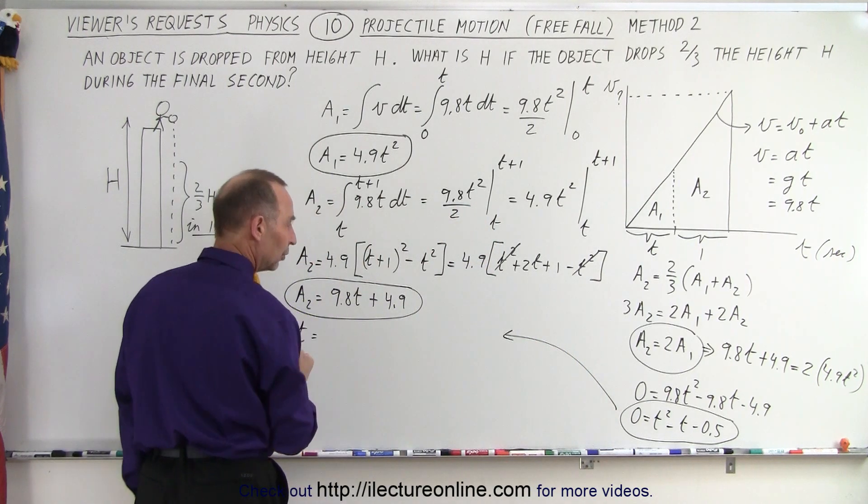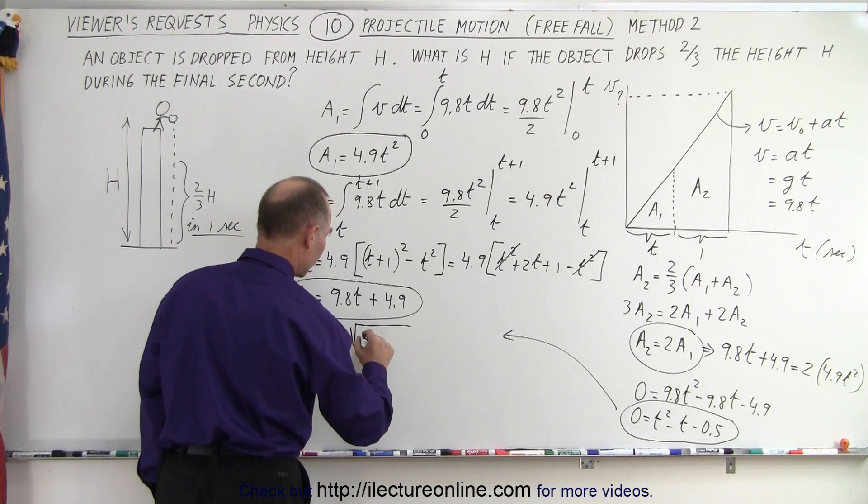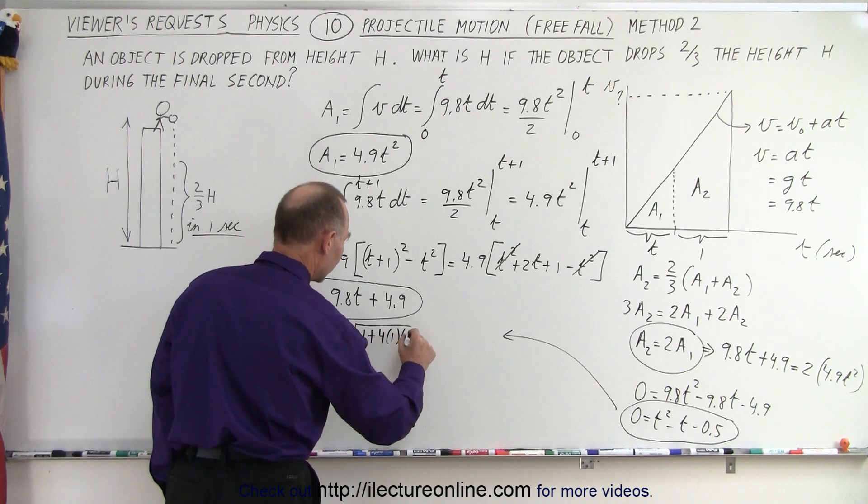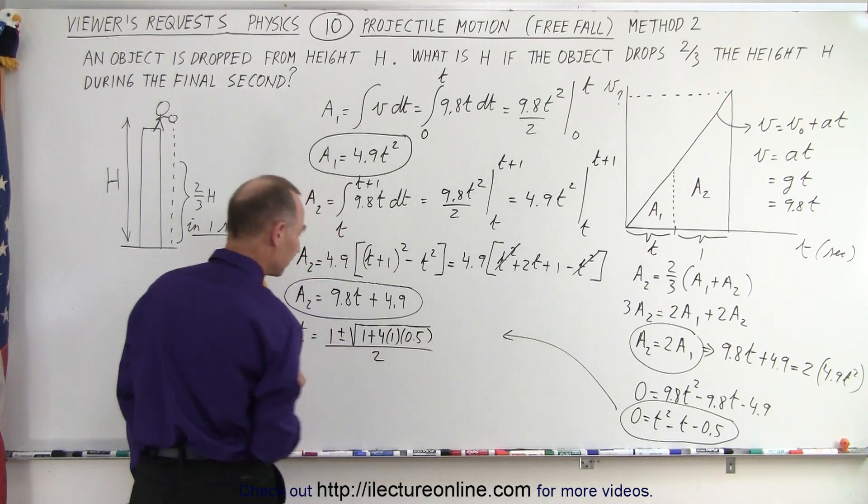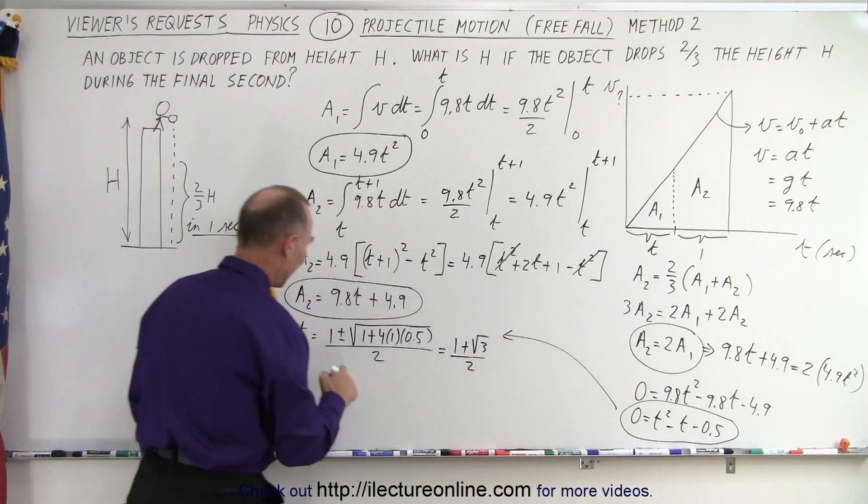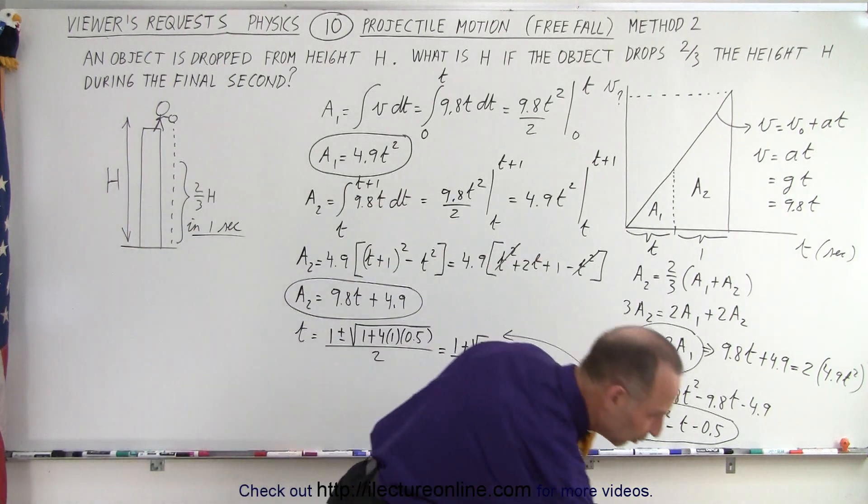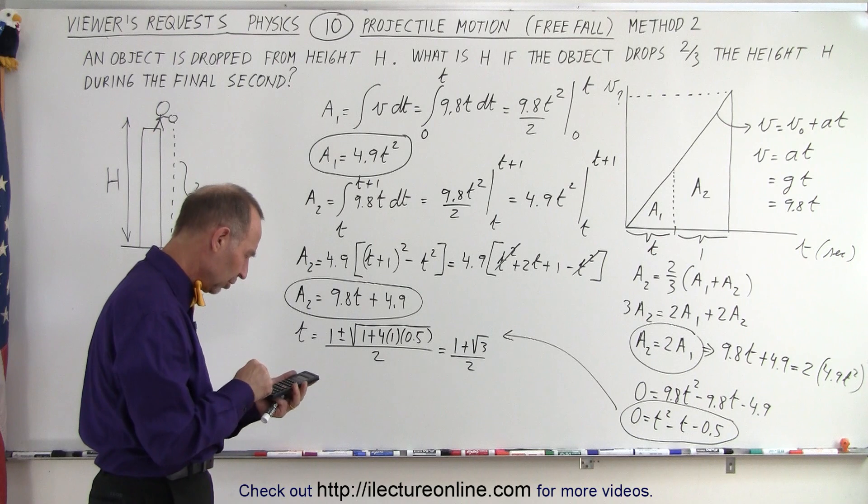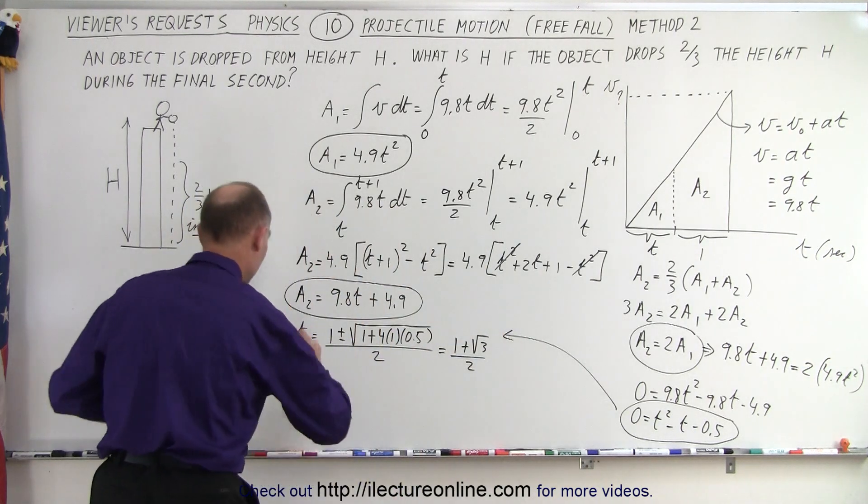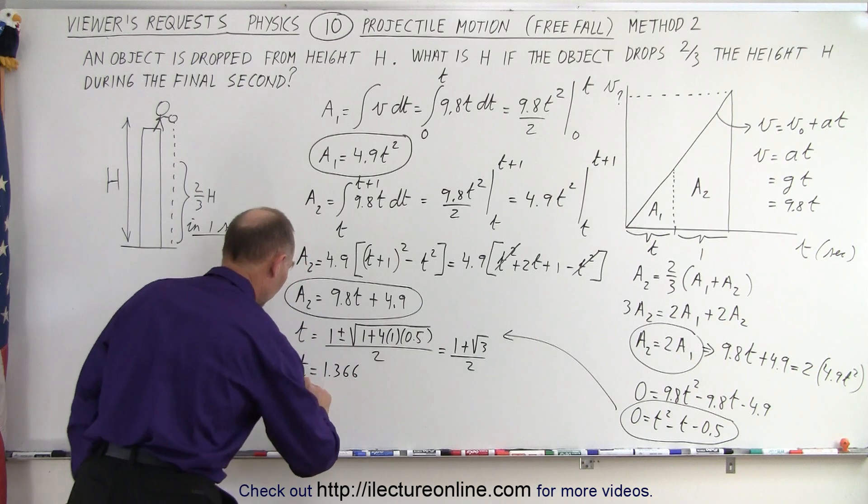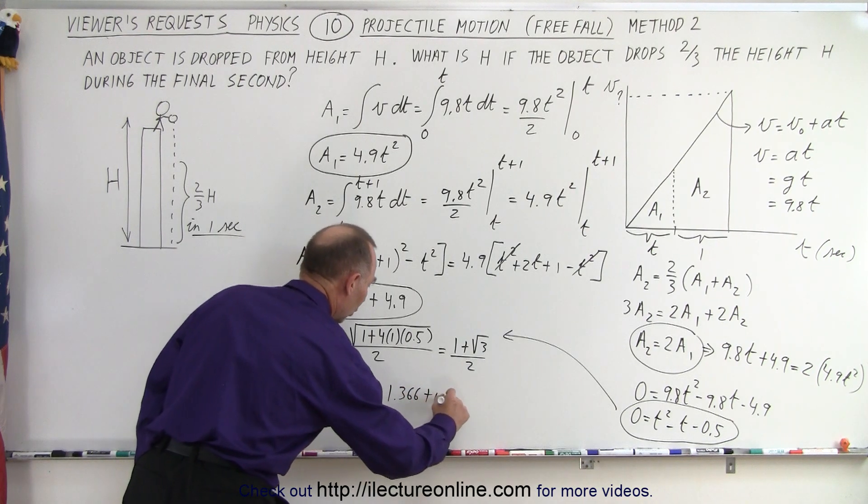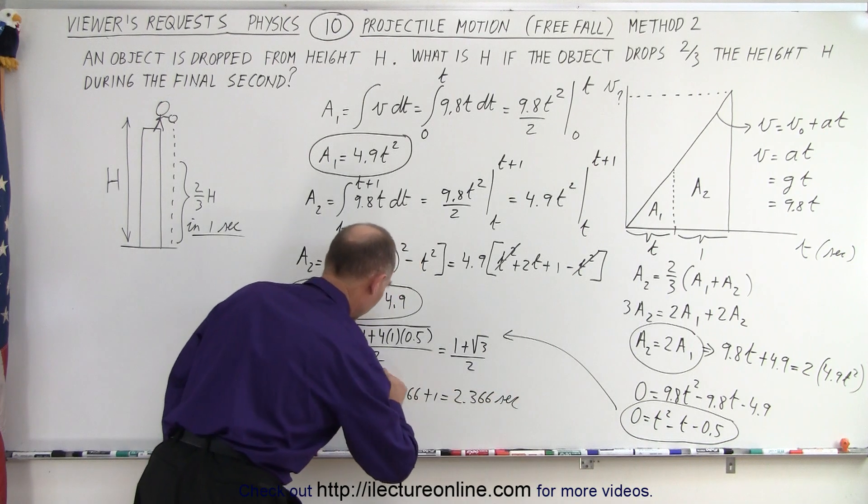So solving this quadratic equation, I can say that t is equal to negative b, which is 1 plus or minus the square root of b squared, which is 1 minus 4ac. But since c is negative, that's a plus. That would be 4 times a times c, all divided by 2a, which is 2. Now notice that this is 2 plus 1 is 3. So this would be equal to 1 plus the square root of 3 divided by 2. I don't need the negative sign because I cannot have negative t. I'm using a calculator. We get 3, take the square root, plus 1 divided by 2 equals, I get 1.366 for the time. So t is equal to 1.366. So t total, which is equal to t plus 1, is equal to 1.366 plus 1 or 2.366 seconds. Of course, this is seconds.